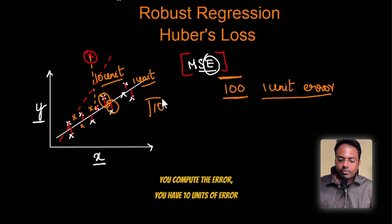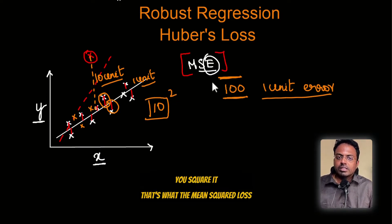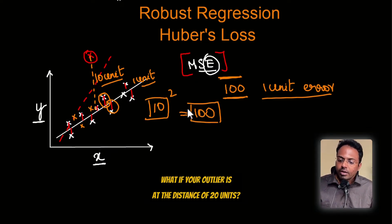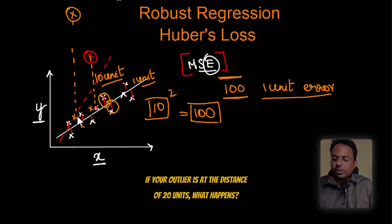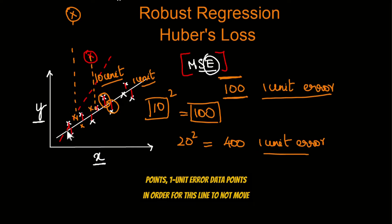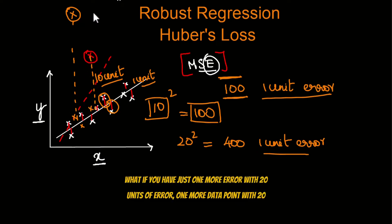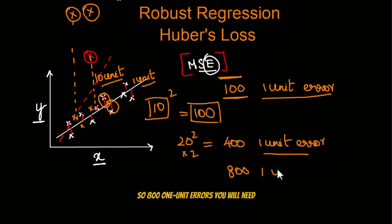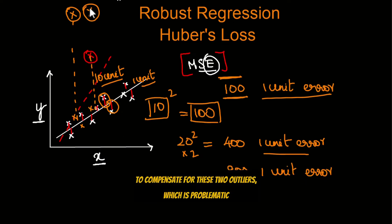What if your outlier is at a distance of 20 units? You would need 20 squared, which is 400 one-unit-error data points for the line to not move. And if you have just one more outlier at 20 units of error, you would need 20 squared times two — that's 800 one-unit errors to compensate for those two outliers. This is very problematic, and we don't want to be in this situation.